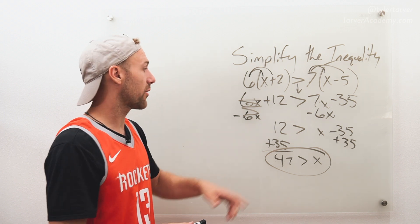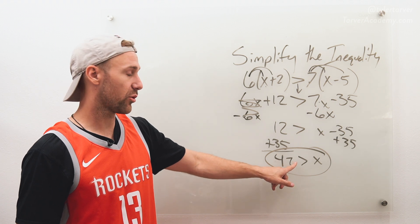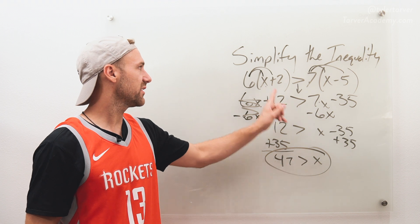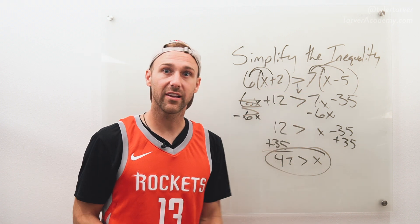You can always check this to see if it's correct by plugging something in. I'm sorry, no no no - x is smaller, so forty-six. You could plug forty-six in here and see if it actually worked, if it was true. If it is, you did it right.